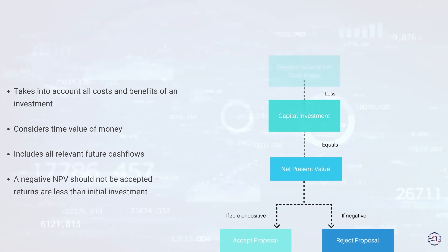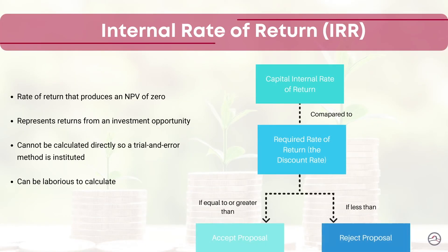The second technique that uses time value of money is called Internal Rate of Return, or IRR. It helps a company determine if it should invest in a proposed project by comparing it with the required rate of return. In other words, it's the annualized rate of return for a given investment, or the rate at which the net present value of all cash flows from an investment is equal to zero. If the IRR is equal to or greater than the required rate of return, then the project should be approved; otherwise, it probably shouldn't be.